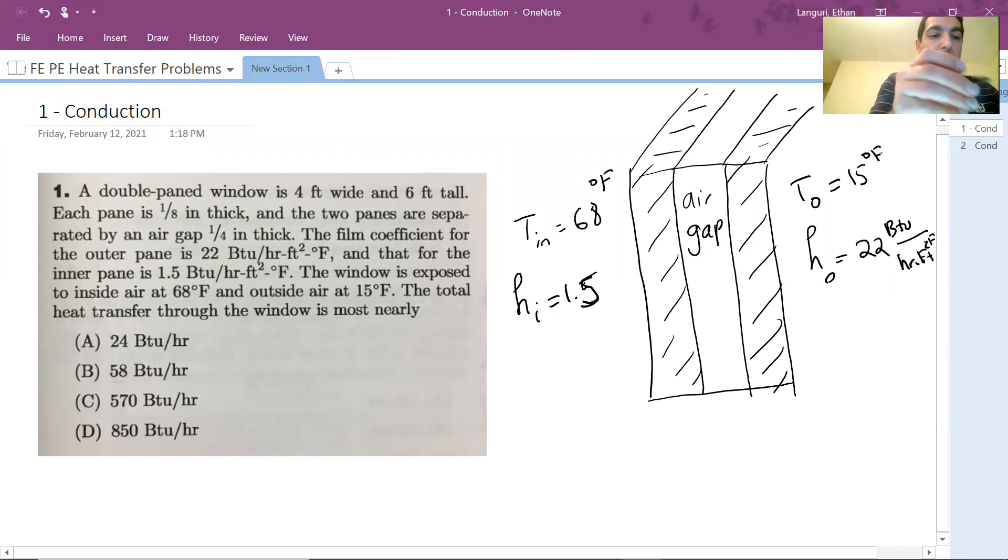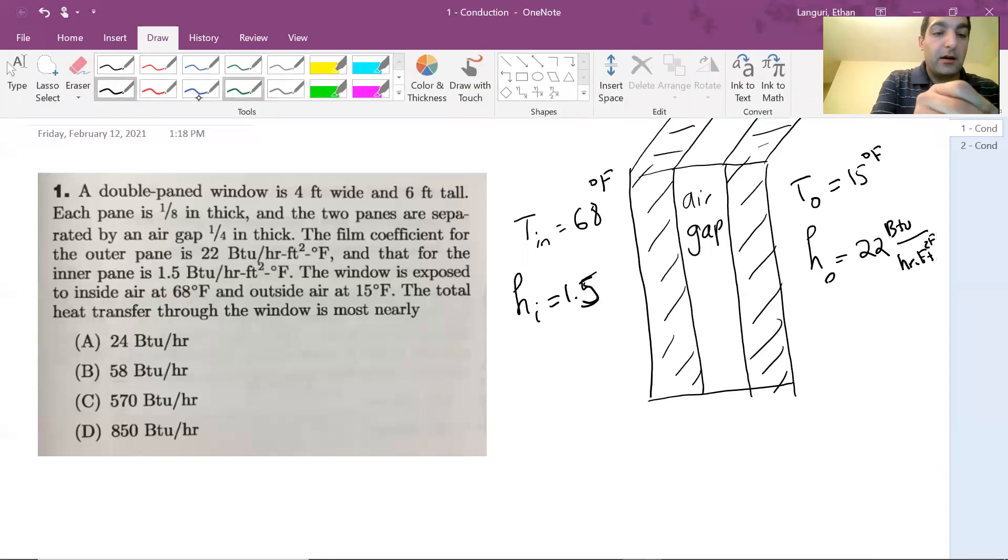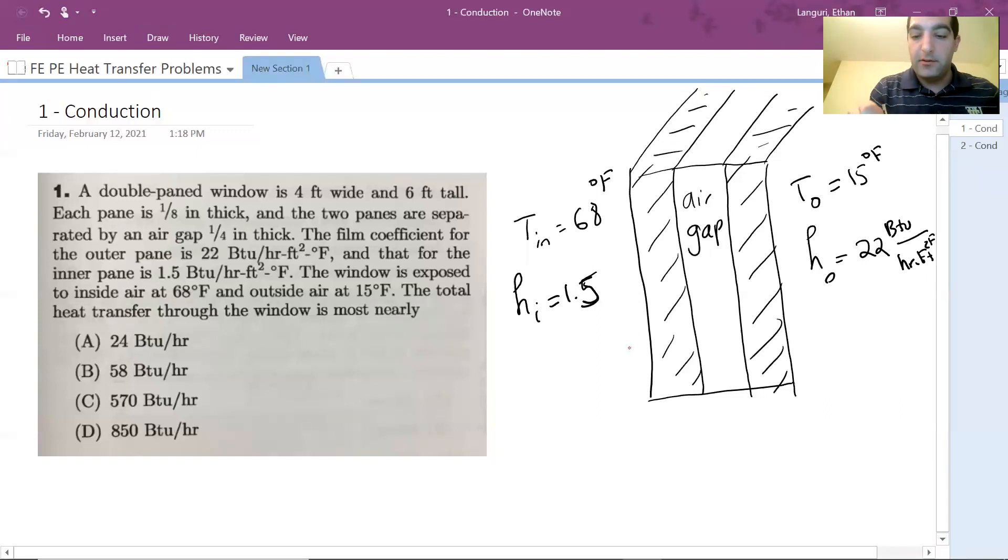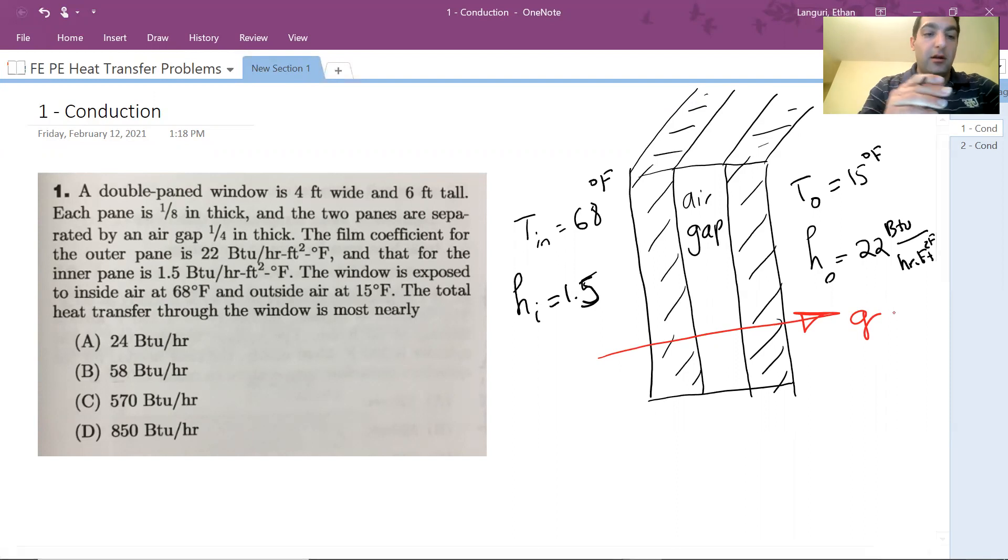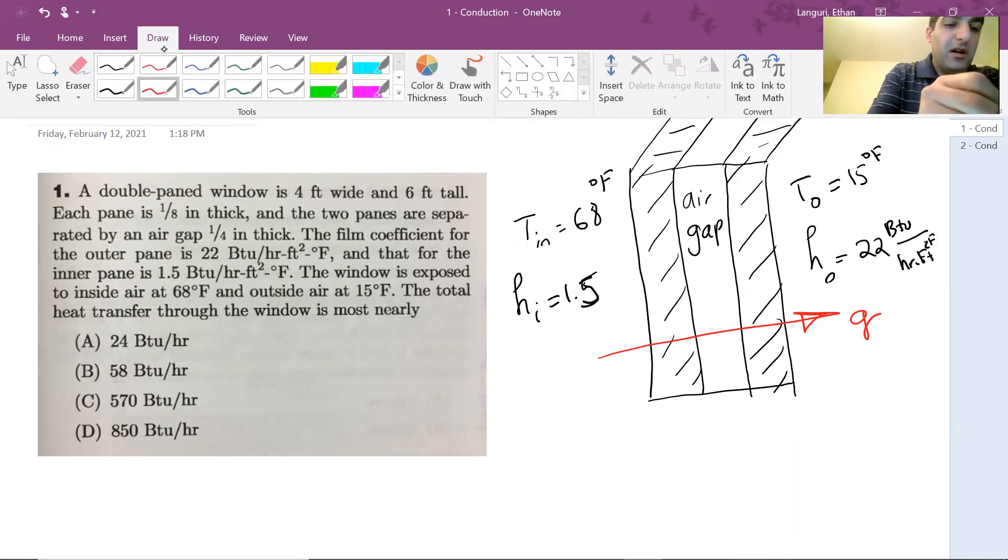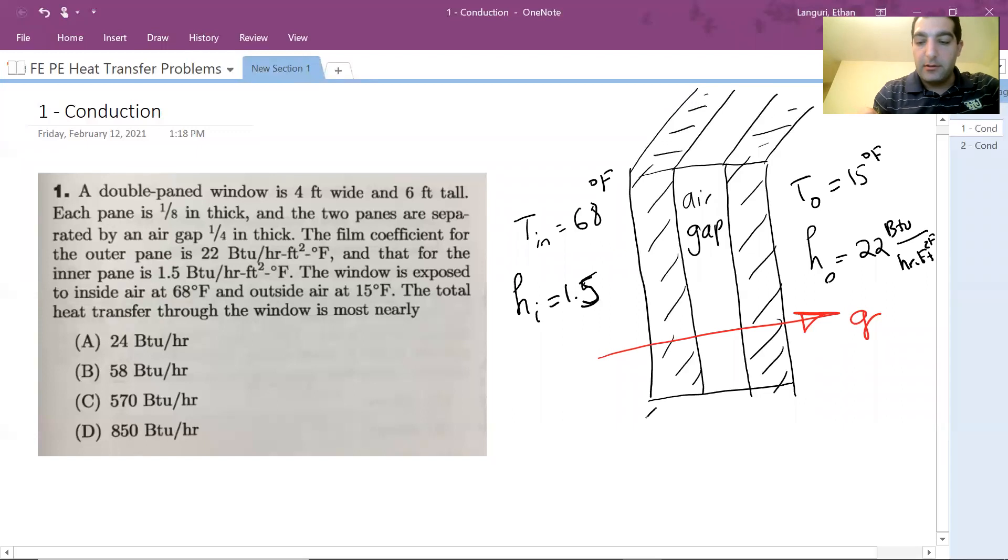As you can see, the inside is warmer than outside. And we know heat is going from high temperature medium to low temperature, so that's the direction of heat. We have the dimensions. The thickness of each pane of the window is 1/8 of an inch, and the air gap is 1/4 of an inch. This is 1/8, and this is 1/4.